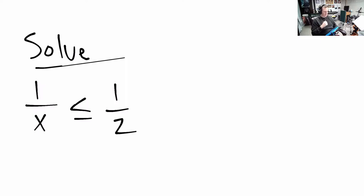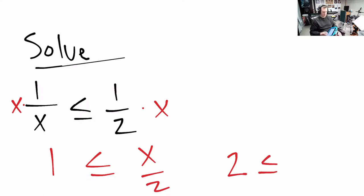So the exact question was to solve this inequality: 1/x ≤ 1/2. Now we would love it if we could just multiply both sides by x, and that would clearly give us on the left side 1 ≤ x/2, then we multiply both sides by 2 to give us 2 ≤ x.